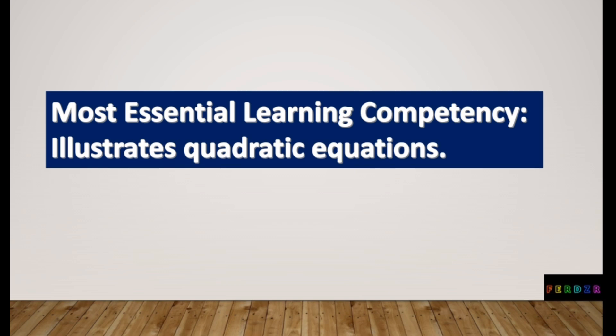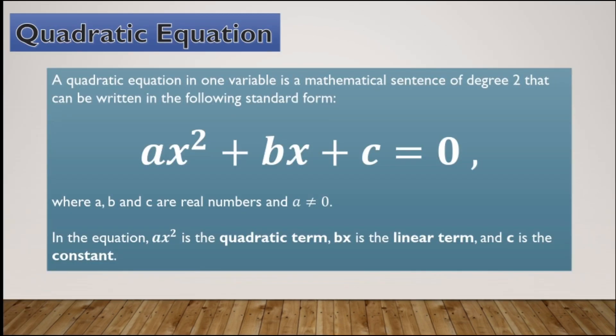Our most essential learning competency illustrates quadratic equations. A quadratic equation in one variable is a mathematical sentence of degree 2 that can be written in the following standard form: ax squared plus bx plus c is equal to 0, where a, b, and c are real numbers and a is not equal to 0. In the equation, ax squared is the quadratic term, bx is the linear term, and c is the constant.